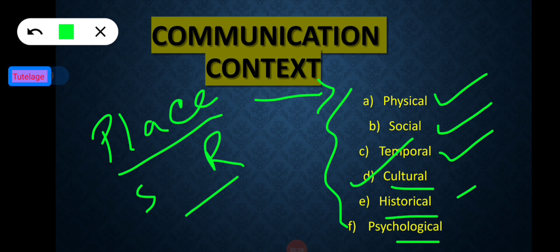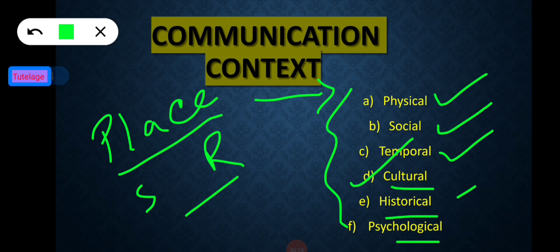The sixth dimension is psychological context. Psychological context basically relates to the extent of formality and friendliness between sender and receiver, as well as their mood and emotions. For example, the way a teacher interacts with students while praising them for their achievement is different from how she talks while scolding them. Communication context has six dimensions: physical, social, temporal, cultural, historical, and psychological.